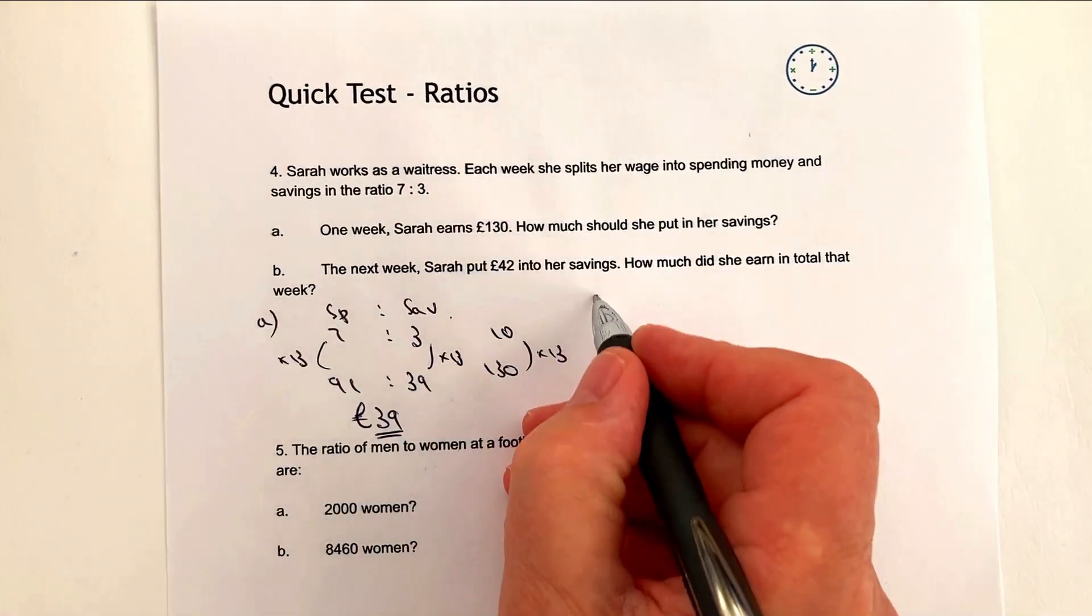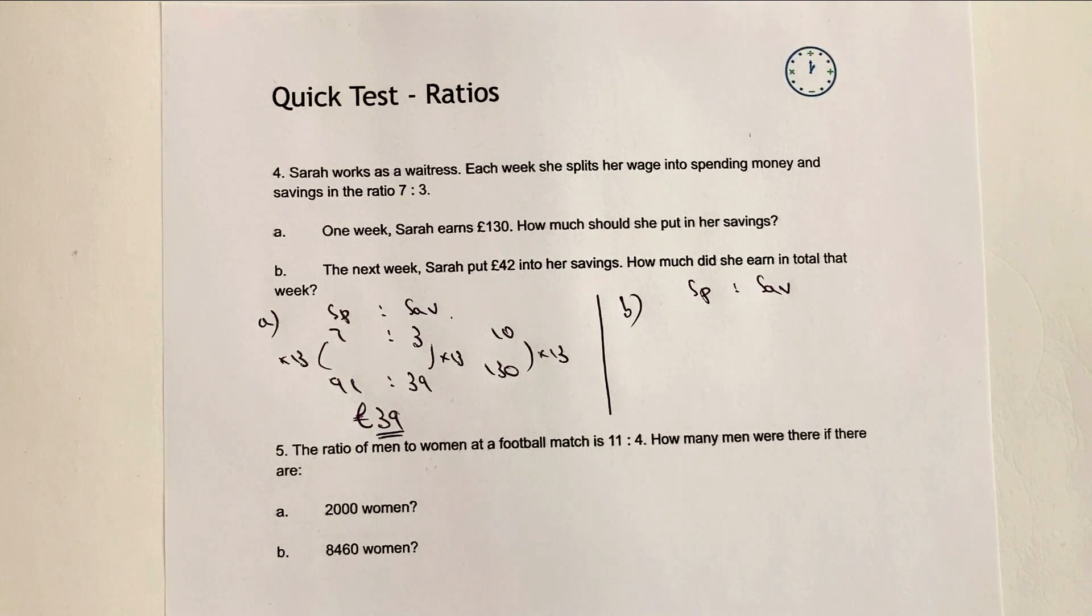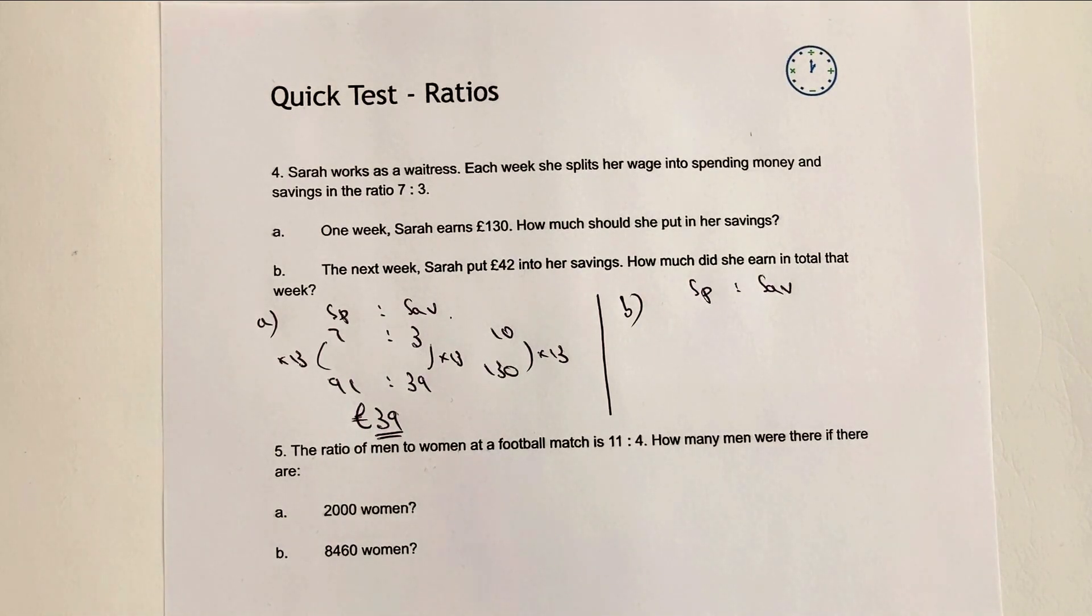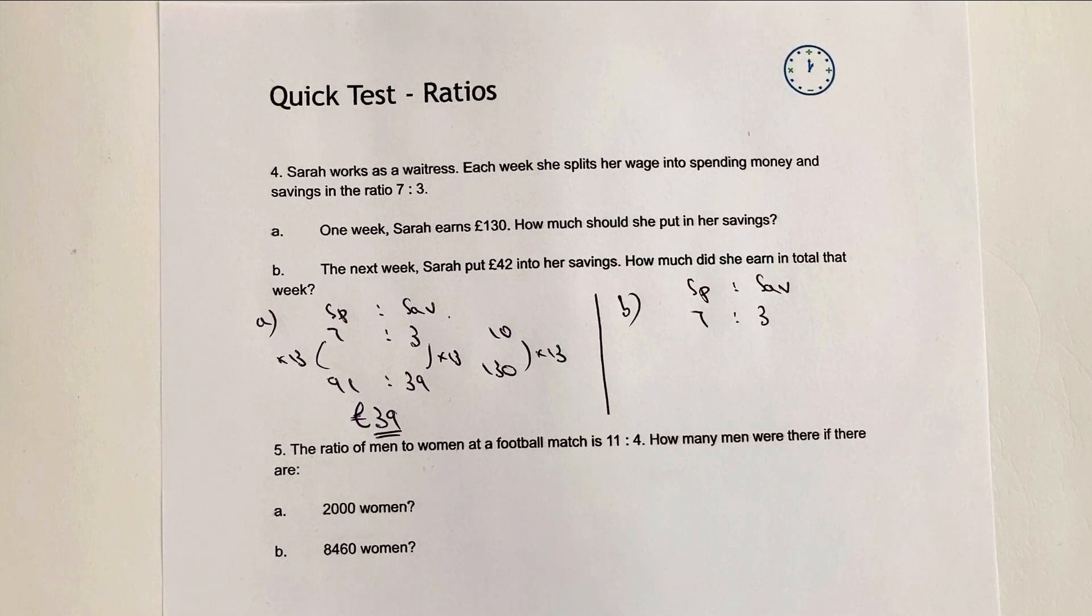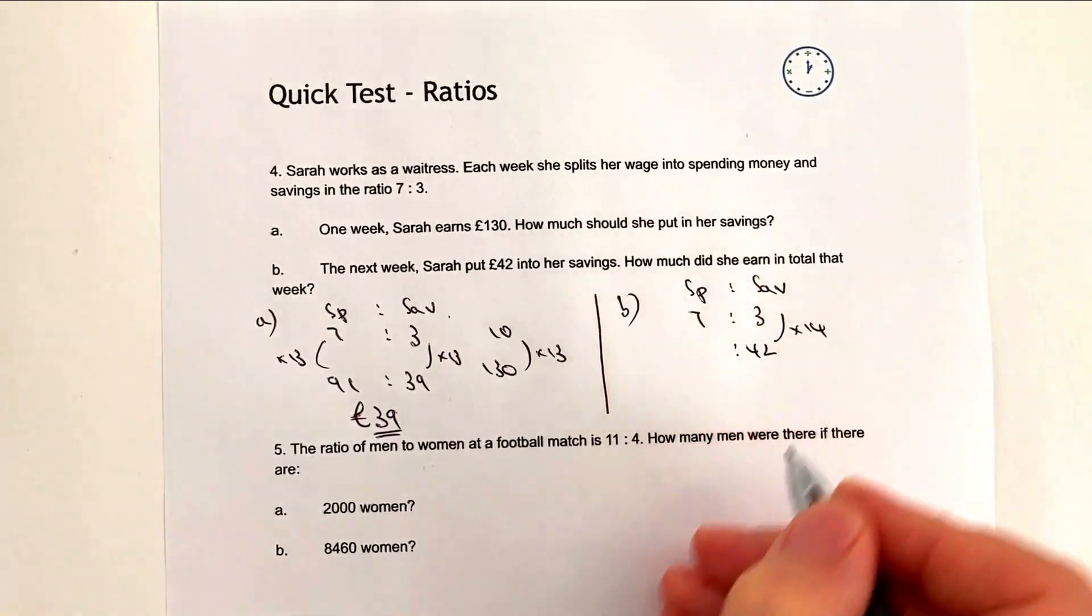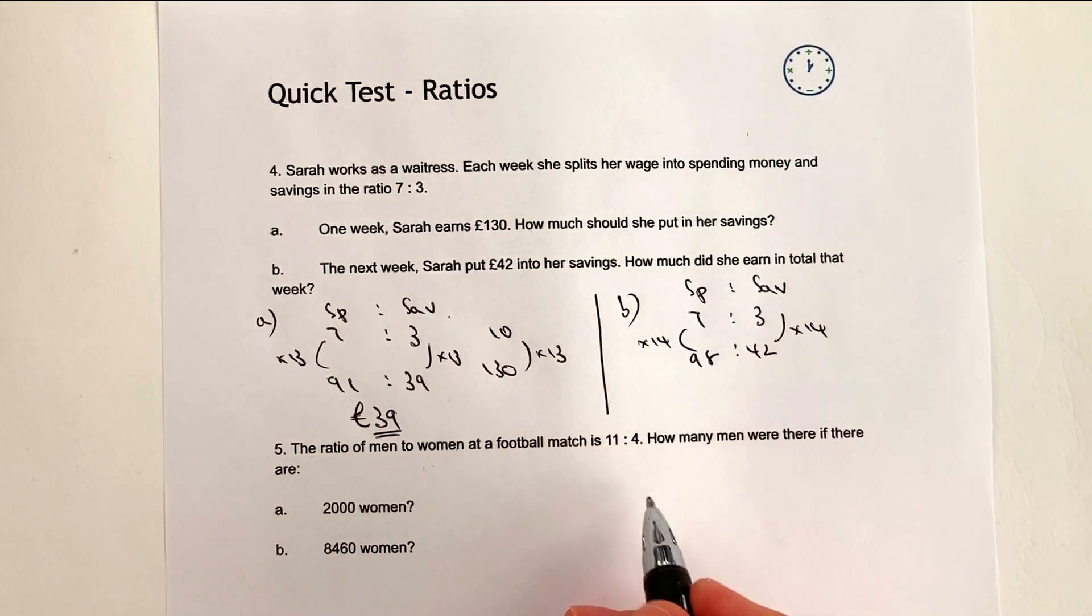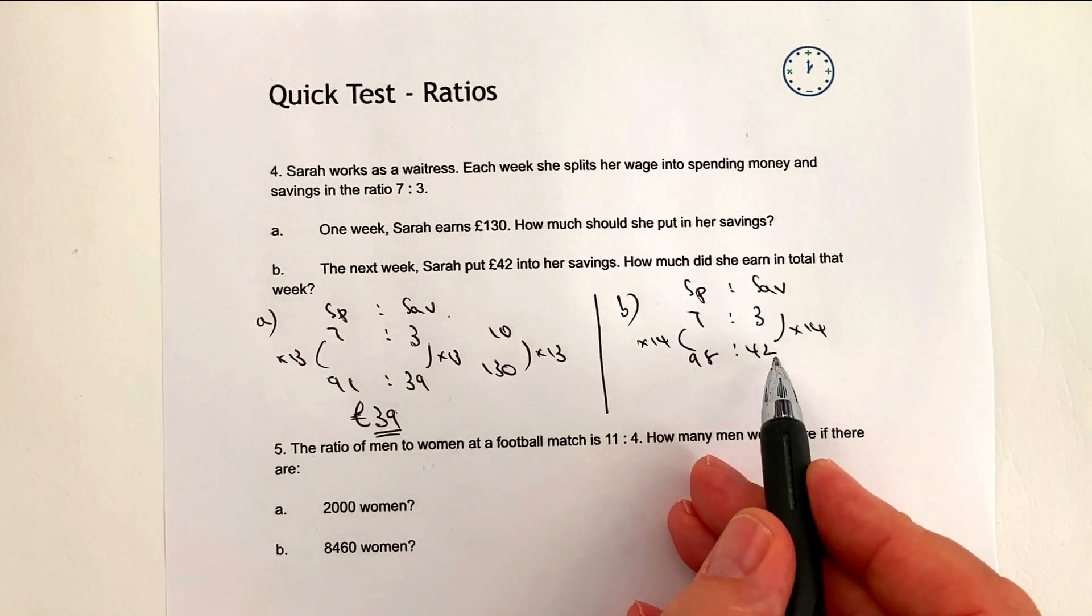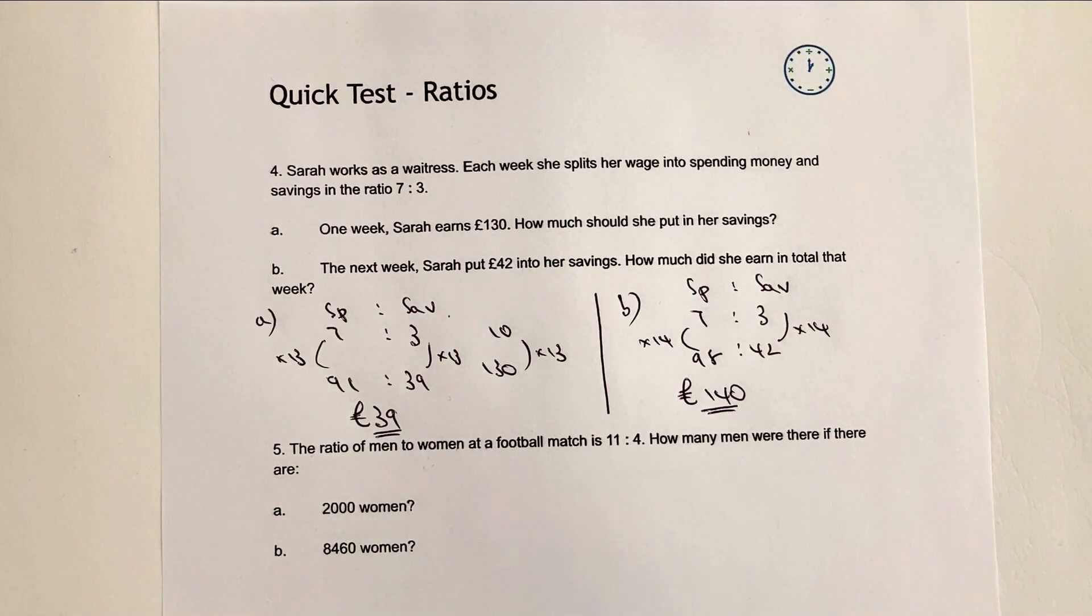Let's have a look then at part B. Here's B, and I'm going to use the whole idea. I always would try to encourage you always to write from first principles, whether it's a formula or, in this particular case, a ratio. I would actually copy, again, what you've written before. It just makes your working more intuitive, easy to follow. So the next week, Sarah puts £42 into her savings. How much does she earn in total that week? Well, if she put £42 into her savings, it's 14 times more than her base number. So I'm going to multiply the 7 by 14. That's going to give me 98. So how much did she earn in total that week is going to be 98 plus 42. So that's going to be £140 that she earned in total that week. Hopefully that's okay for you.